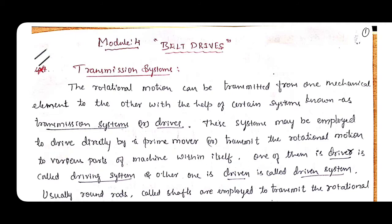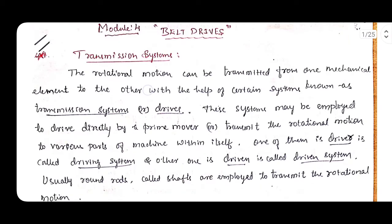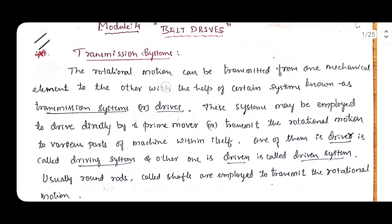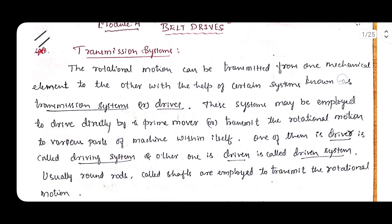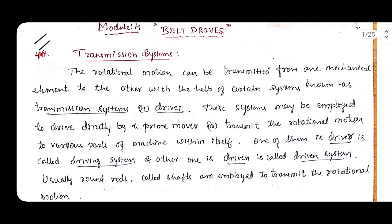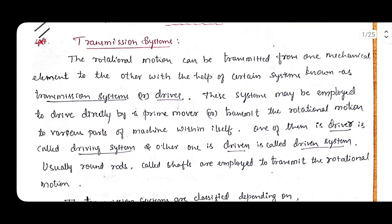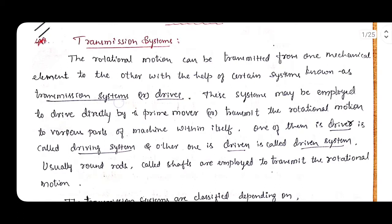First, before going to belt drives, we have to understand the transmission system. What is a transmission system? The rotational motion can be transmitted from one mechanical element to another with the help of certain systems known as transmission systems. Whatever motion we are transmitting is rotational, and the system used to transmit it is called the transmission system.